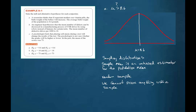The only thing that we can do is use what we know about the normal distribution, or other distributions later on, to draw a conclusion about the likelihood of a sample statistic acquiring a particular value when the population parameter is as we are assuming.